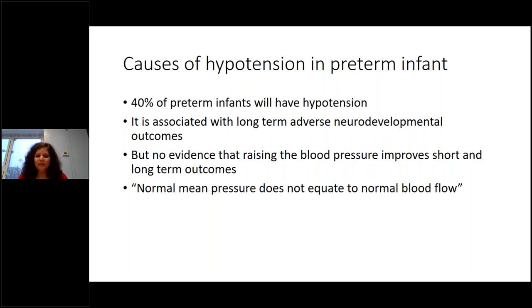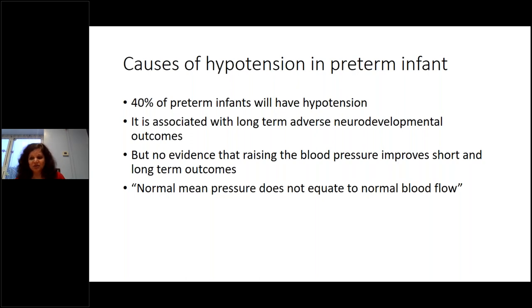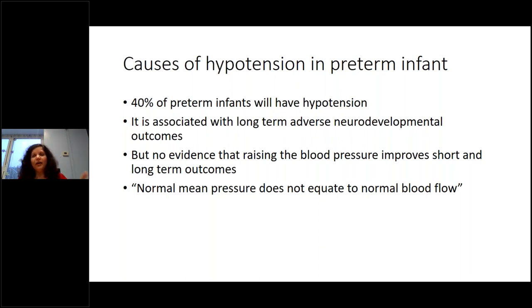Normal mean pressure does not equal normal blood flow — that is the take-home message. You should look at blood pressure but don't just look at the number and equate it to gestational age. You have to look at the overall perfusion, what the end-organ perfusion is, and how it is affecting the baby. A baby with low blood pressure but normal end-organ perfusion may be fine; a baby with normal blood pressure but impaired end-organ perfusion may have worse outcomes.